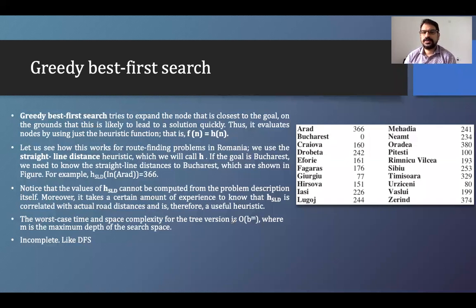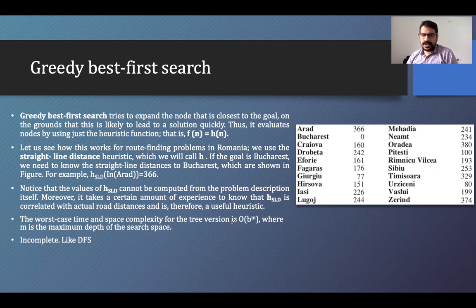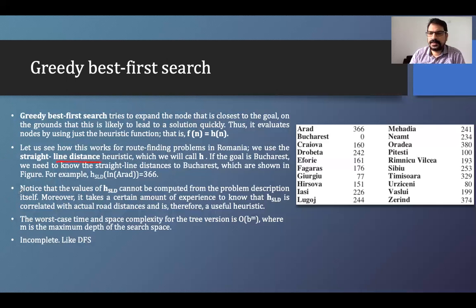The next topic is Greedy Best First Search, which is a modification of Best First Search. In Best First Search we use the evaluation function, but in Greedy Best First Search we use the heuristic value. That heuristic value is found using the straight-line distance method, also called the Euclidean distance method or the triangle inequality method.